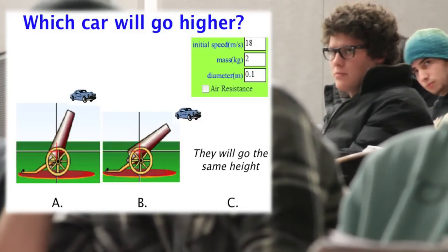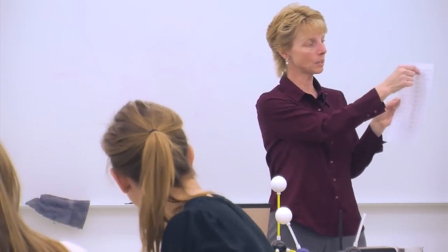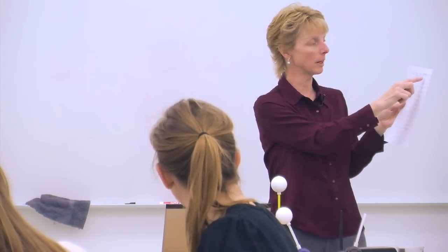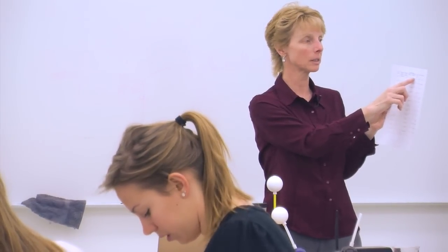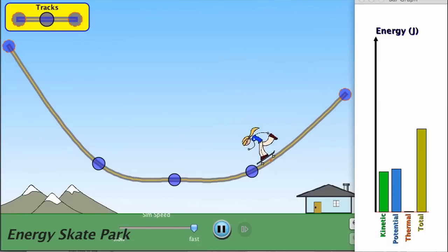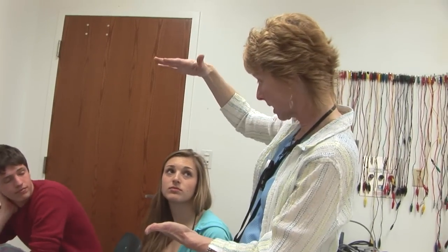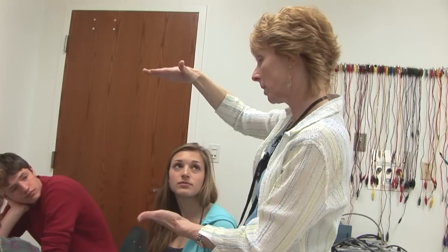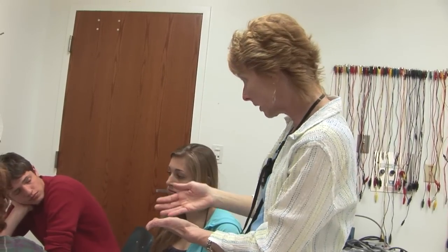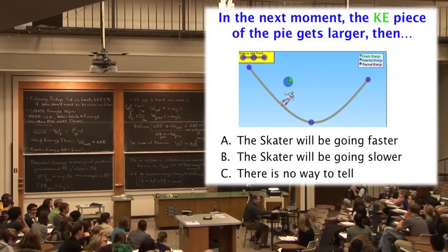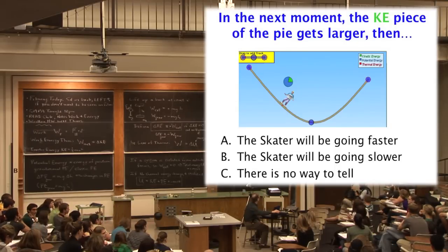Sometimes I use different set ups of the simulation in the answer choices and then the students are asked to distinguish which set up would have a particular behavior. So sometimes I'll ask some questions like for the energy skate park, I might have a pie graph with the kinetic energy and the potential energy shown. And I'll say if in the next moment the kinetic energy pie piece is getting larger, what might the skater be doing? And I'd have a picture of the skater and the choices.